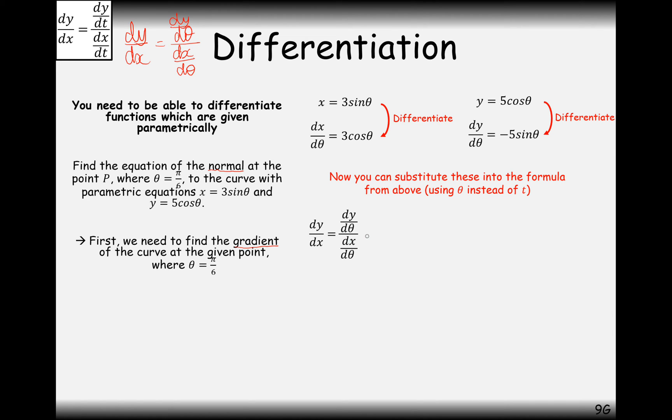Then put them two together. So dy by d theta over dx by d theta. So do the y one divided by the x one. Make sure you don't get that the wrong way around. A classic mistake that I sometimes make is that I think I've done the x equation first, so I need to put the x on the top because that's where it goes in first. Make sure you've got the y equation on the top. So in this case here it's going to be minus 5 sine theta over 3 cos theta. So now we're going to plug in the value of pi over 6 to work out the gradient. And in this case here we're going to get minus 5 over 3 root 3.